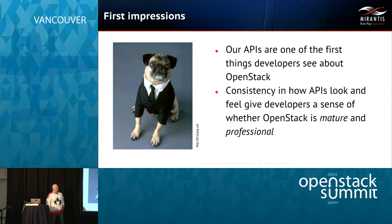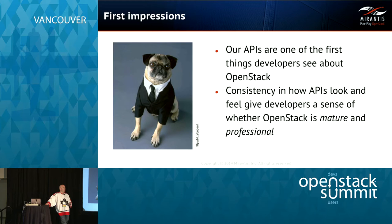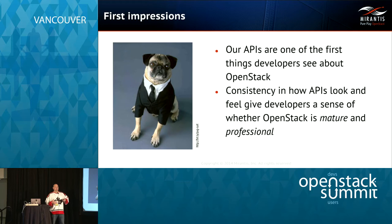The biggest reason APIs matter is they're the first thing that developers see when they interact with OpenStack. You could say developers also use the Python clients, but not all developers are Python people. We have SDKs for Java and all sorts of other languages, so all of those things are making calls to the APIs. The RESTful APIs that the OpenStack projects publish are our first impression.